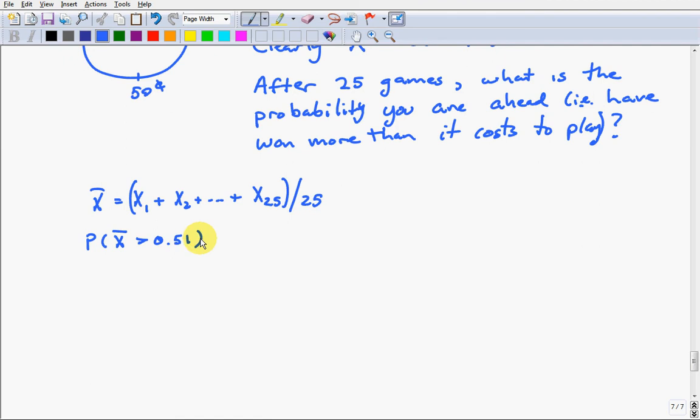So this is clearly a statement about a sum of random variables, in particular an average of 25 random variables. They're all independent and identically distributed. That is, one spin doesn't affect the next. The amount you win each time has the same distribution. So we have to turn to the central limit theorem and figure out what the expected value and variance is of x bar. So we need the expected value of x1, and we need its variance.